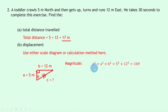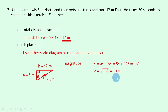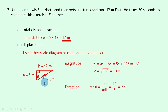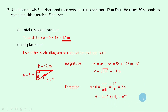To find the magnitude we use Pythagoras: c squared equals a squared plus b squared. Plugging in the numbers, we get 5 squared plus 12 squared, which equals 169, which means c will be the square root of 169, equal to 13 meters. Then to find the direction, we use tan theta equals opposite over adjacent. Opposite the angle is 12, adjacent is 5, so we have 12 divided by 5, which equals 2.4.